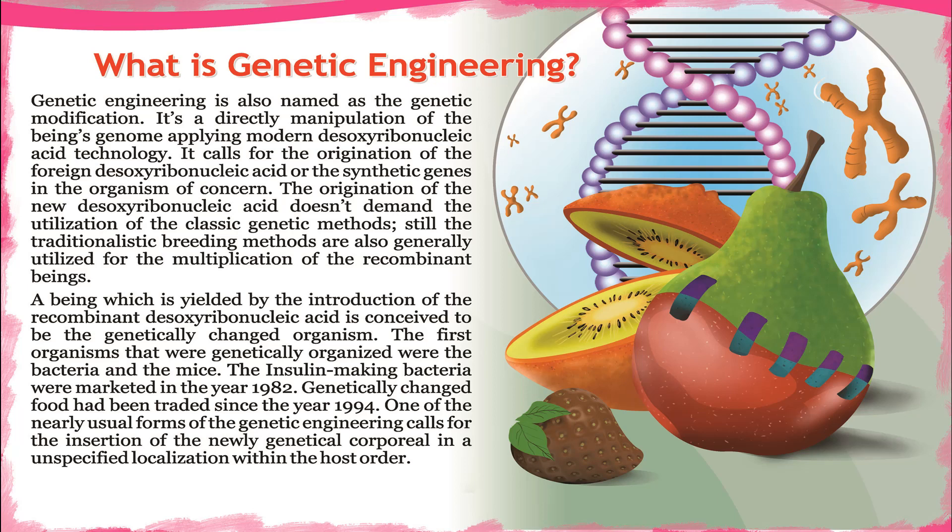An organism produced by the introduction of recombinant DNA is considered a genetically modified organism. The first organisms to be genetically engineered were bacteria and mice. Insulin-producing bacteria were marketed in the year 1982, and genetically modified food has been traded since 1994. One of the most common forms of genetic engineering involves the insertion of new genetic material at an unspecified location within the host genome.